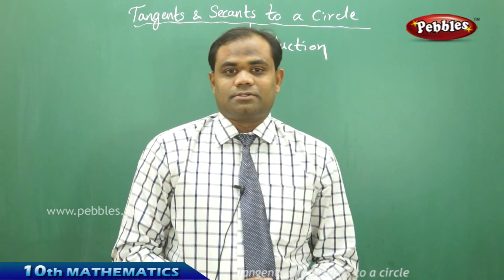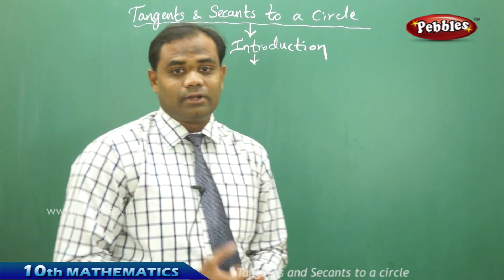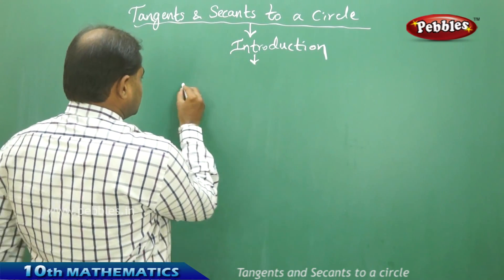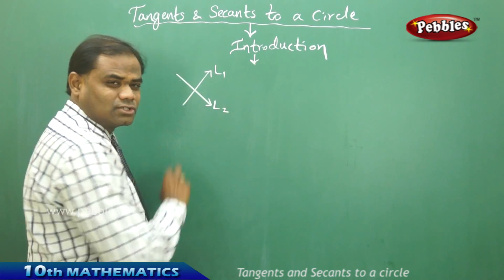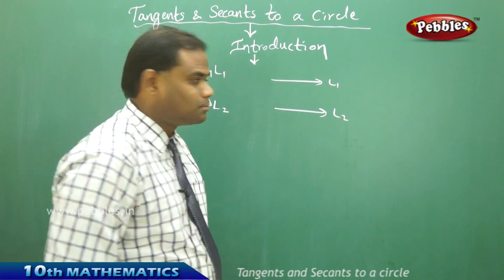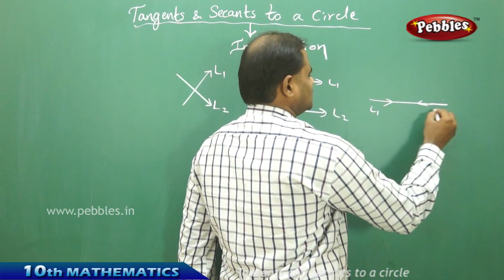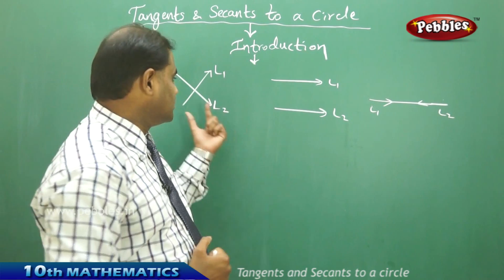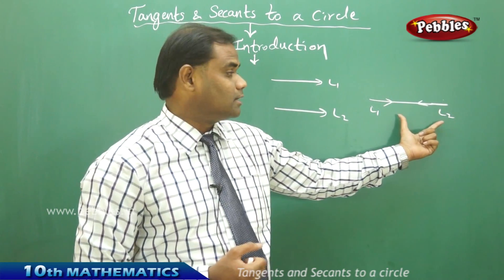To start with, let's recap the straight lines which we discussed in the previous session. Straight lines had three different cases: the line L1 is set to intersect L2, or the second possibility was that L1 was parallel to L2, and the third possibility was that L1 and L2 coincide — that is, intersecting at infinitely many points.